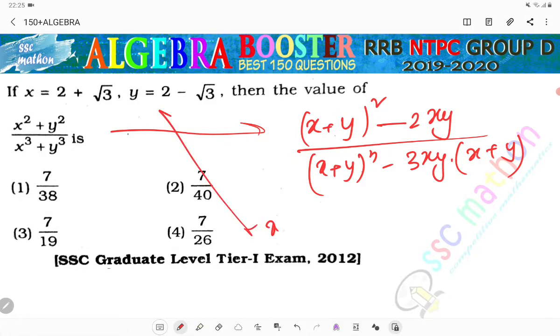What is x plus y? x plus y equals 2 plus 2, that's 4. And xy equals 4 minus 3, that is equal to 1.